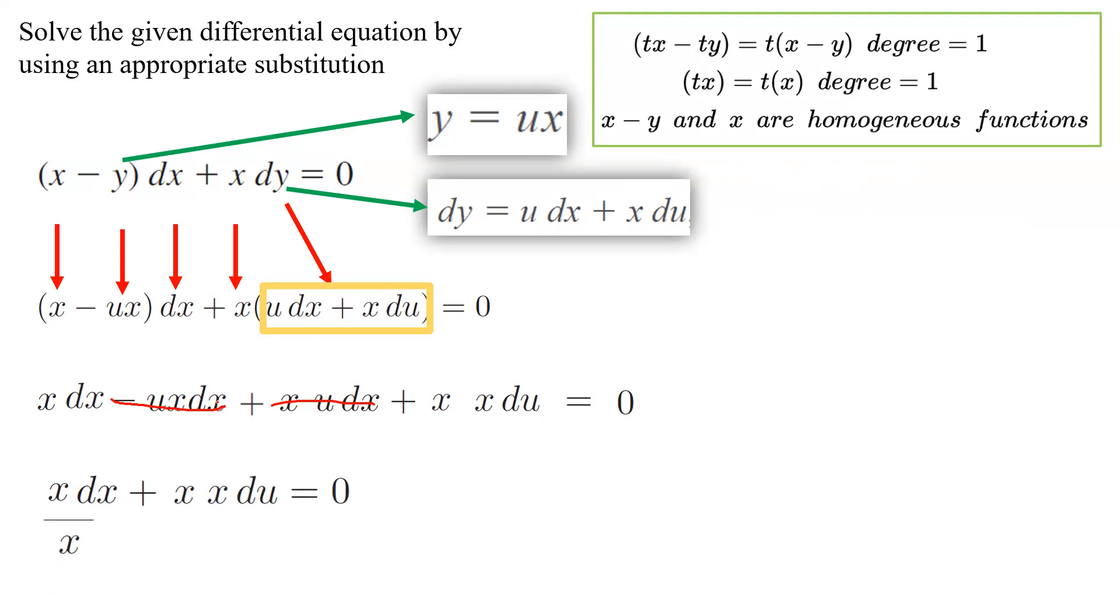Now divide everything by x to simplify this further. You can get rid of common factors. This simplifies into dx + x du = 0. But this is basically a separable differential equation. Let us go to the next step and solve this separable differential equation.